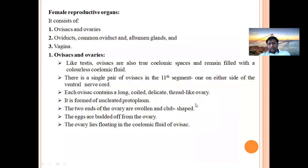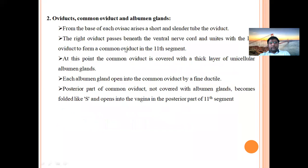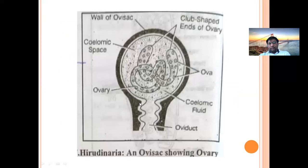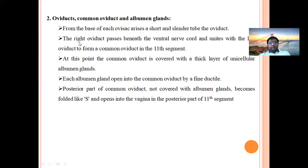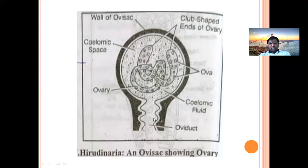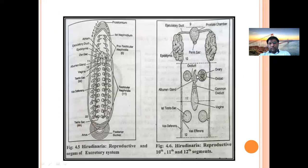The second part is the oviducts, common oviduct, and albumin glands. From the base of each ovisac arises a short and slender tube called the oviduct. The right oviduct passes beneath the ventral nerve cord and unites with the left oviduct to form a common oviduct in the eleventh segment. In the diagram, the oviducts arising from the right and left ovisacs unite to form a common oviduct in the eleventh segment.